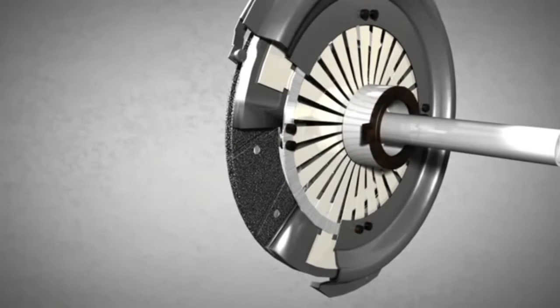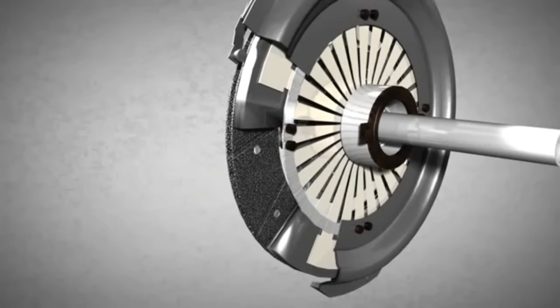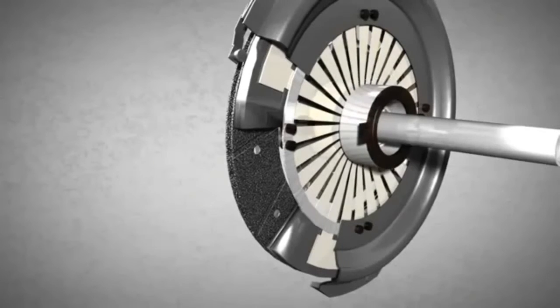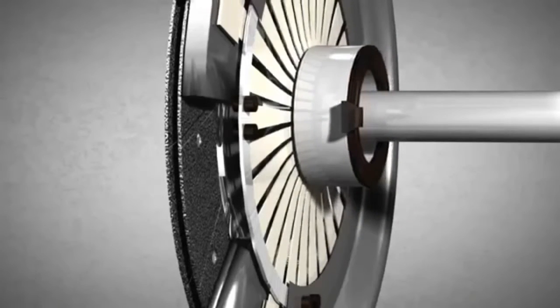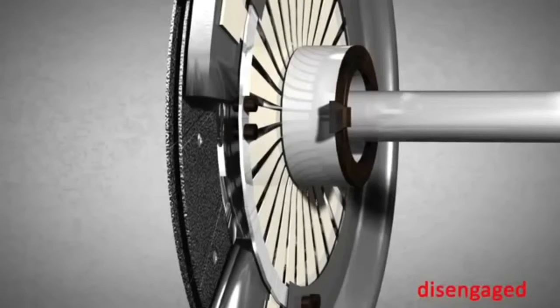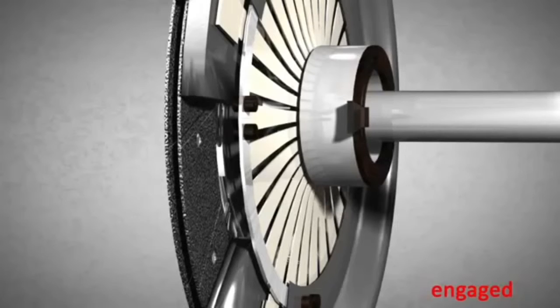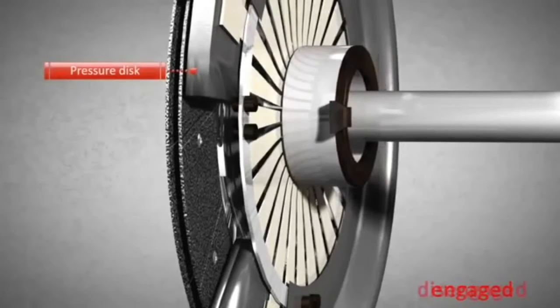When the release bearing is pushed into the spring, the inner portion of the spring is moved in the direction of the clutch disc, whereas the outer portion of the spring is moved in the other direction. Consequently, the clutch is disengaged because the pressure disc is mounted in a flexible manner to the casing.